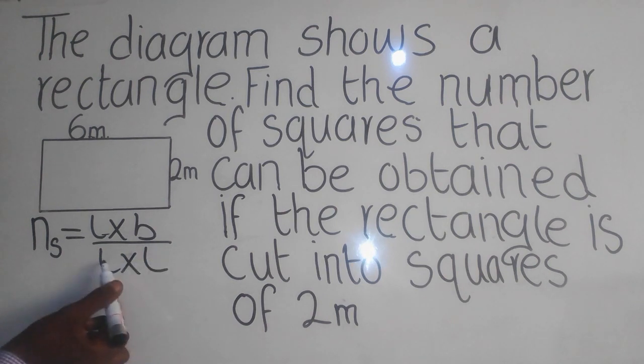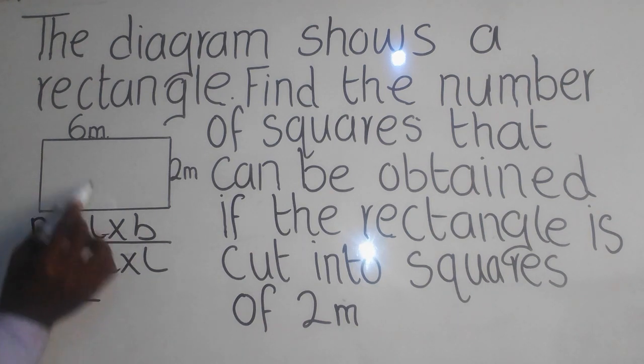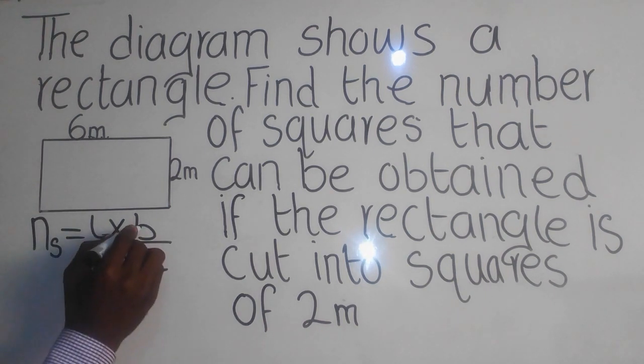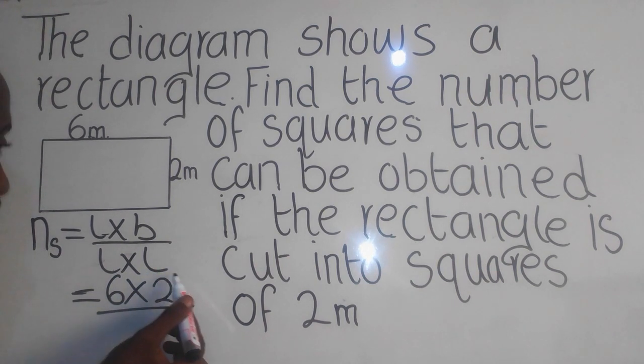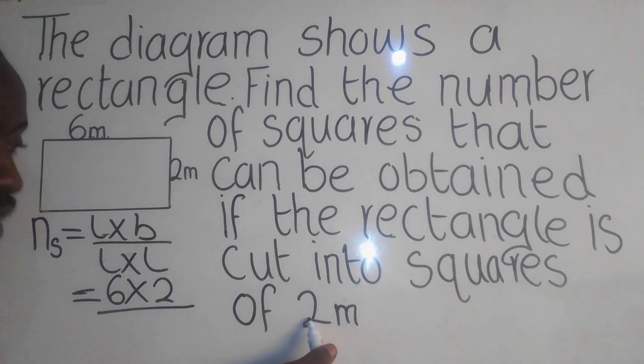Now you say equal there. What is the length? It's six, so six multiplied by base which is two there. Now L times L simply means length times length of the square. What is the length of the square? They have said two. Remember that the square has equal sides, that simply means it will be two times two.